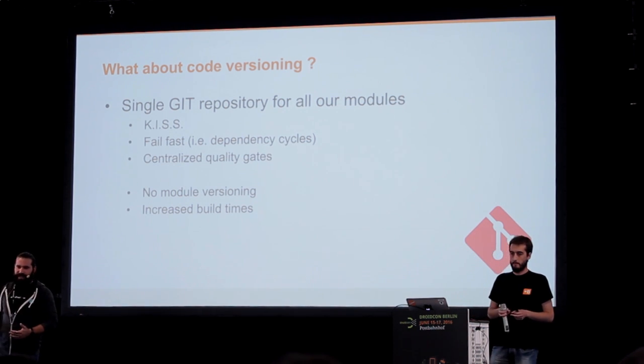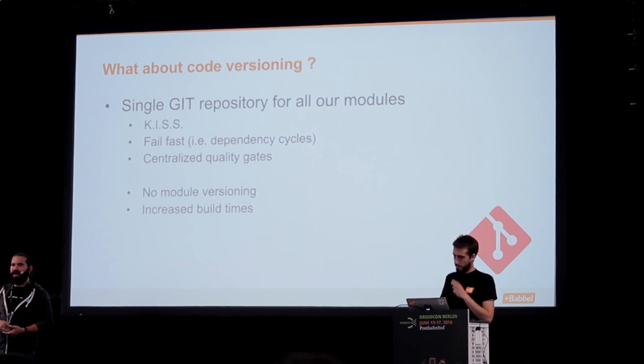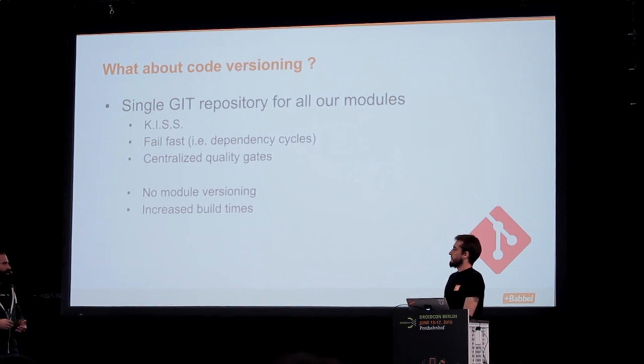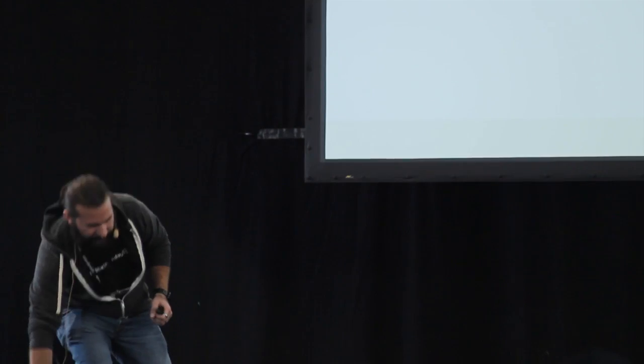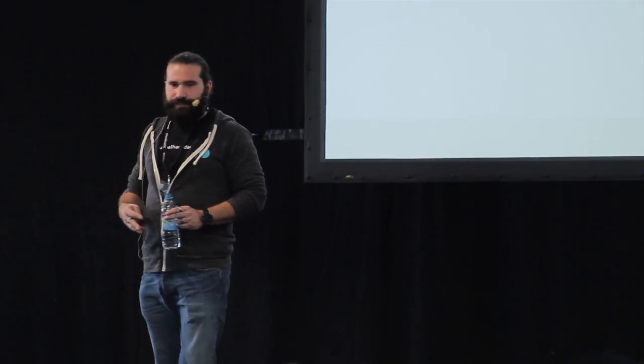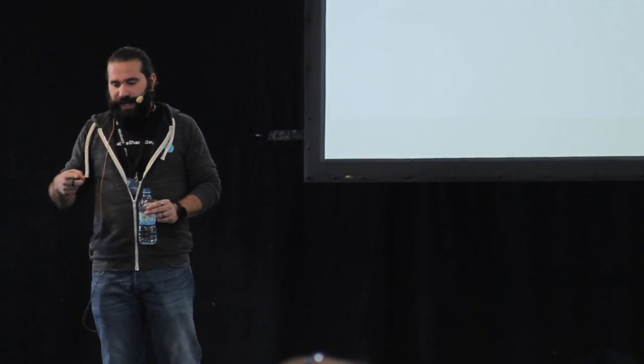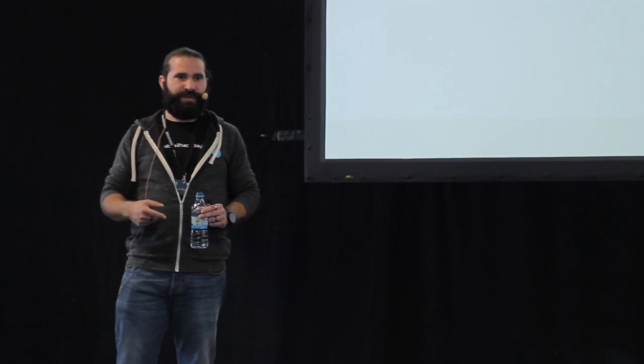That's how we isolate code and responsibilities in our modular setup. Now, where does all our code base live? We have a couple of alternatives, but we selected a single Git repository for all of our modules. You might ask why — doesn't that go against autonomy and isolation? We try to keep it stupid simple. We want to fail fast: the developer who makes a change, breaks an API, breaks an interface, or breaks the Gradle setup will get the failure the first time they click Instant Run in Android Studio — before they even commit. We also wanted centralized quality gates, which are way easier to implement in this setup.